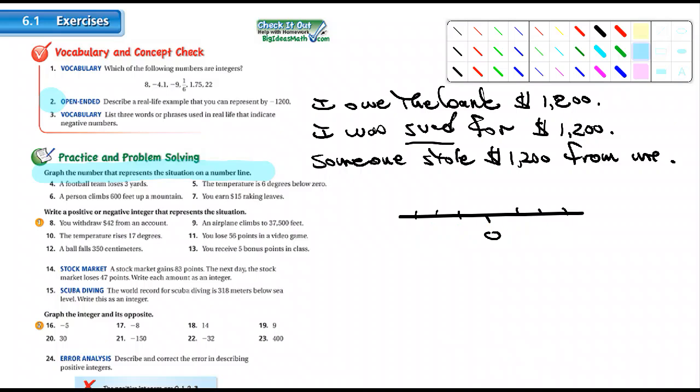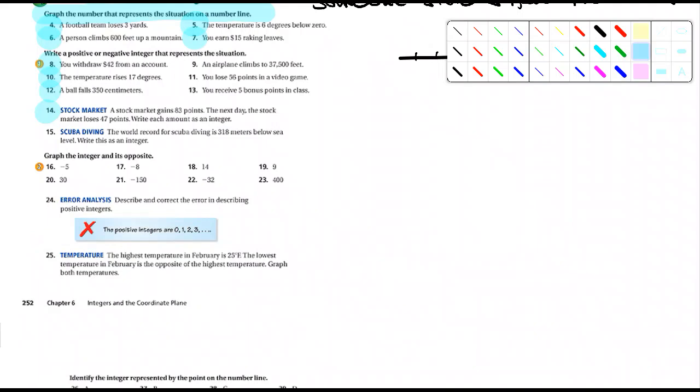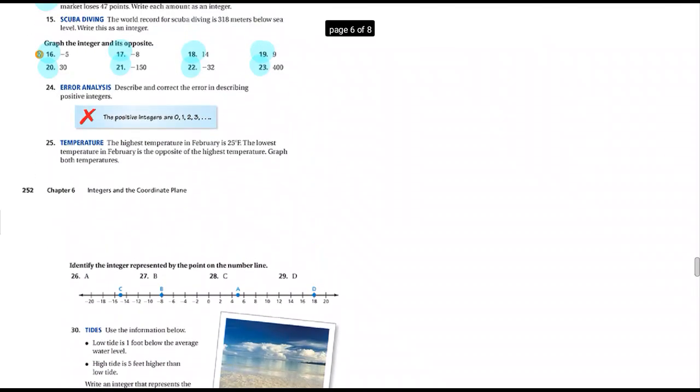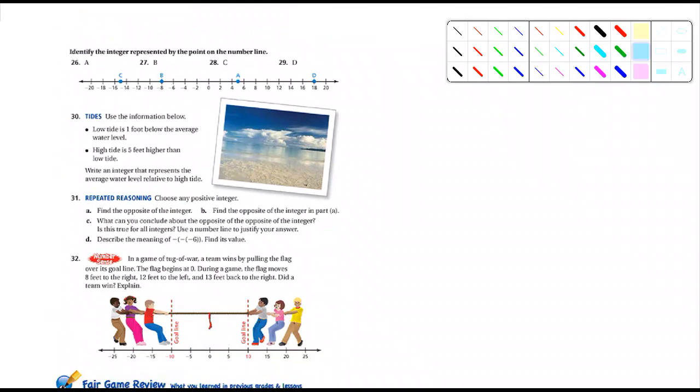Okay. So I do want you to do 4, 5, 6, and 7. Write a positive or negative integer. So 8, 10, 12. 14. 16, 17, 18, 19, 20, 21, 22, 23. Did you say 20? Did you say 15? Right there, 16 through 23. Okay. I was going to do. And then, in a minute,